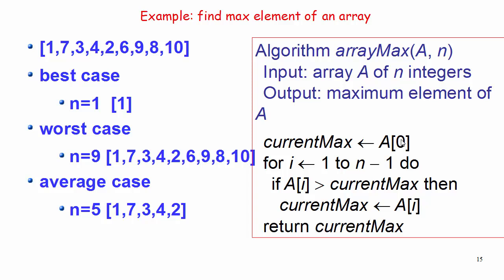In this algorithm, we first take the first value of the array at index zero as the maximum value, then we iterate over the elements one by one. Inside the for loop we compare each element with the current maximum value. If a value is greater than the current maximum, we update the current maximum to the new value. At the end of the function we return the current maximum value.